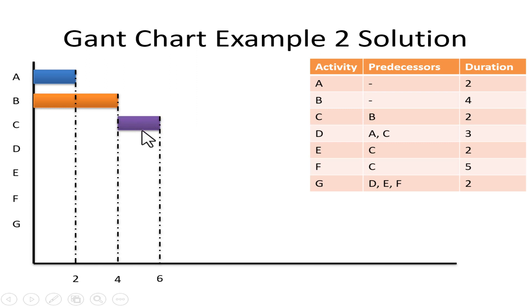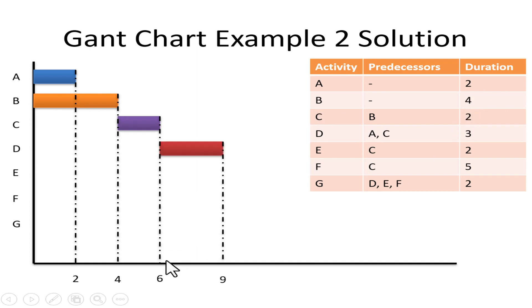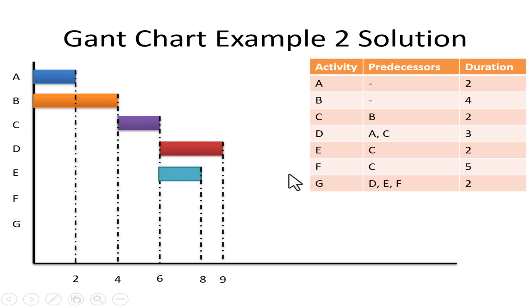C starts after P, and since P has a duration of 4 and C has a duration of 2, that gives 4 plus 2 equals 6. Then activity D depends on A and C — the last one to finish is C, so D begins after C. Activity E depends on C, so E begins from the end of C. Activity F also depends on C, so F also begins from the end of C.